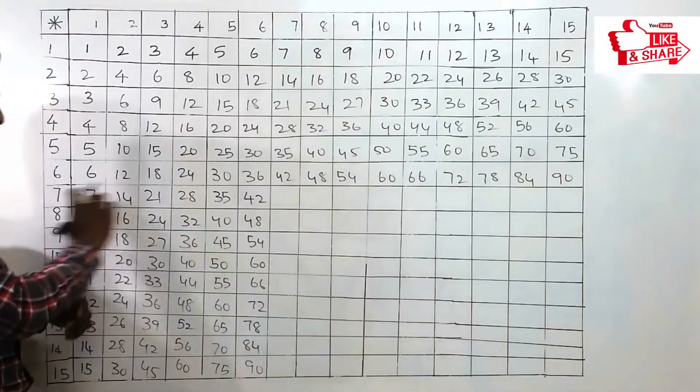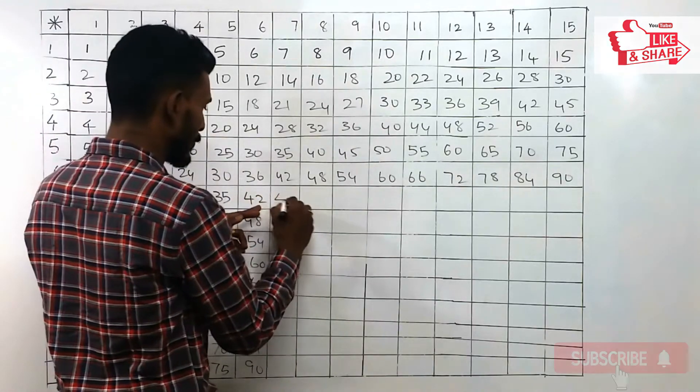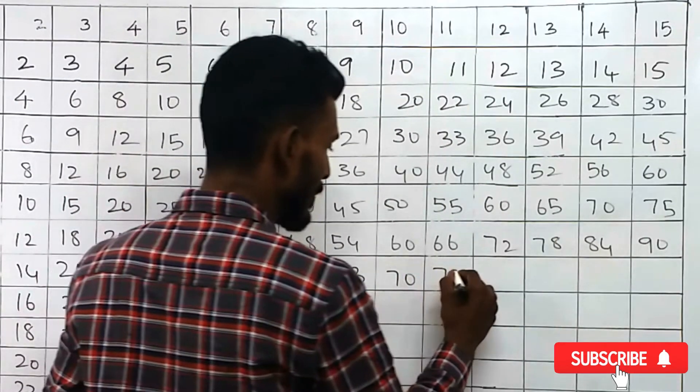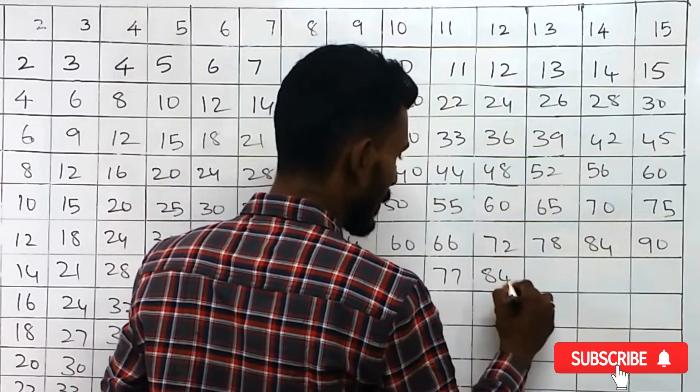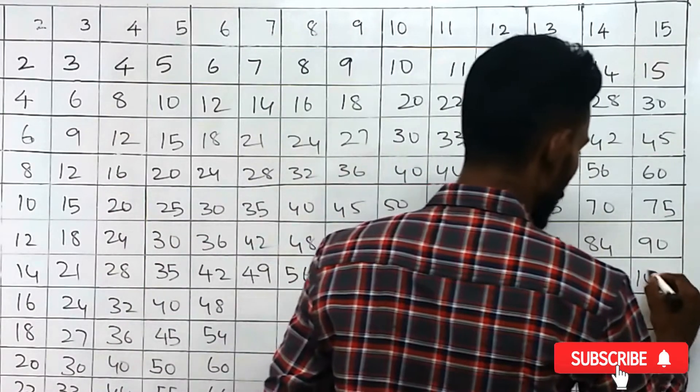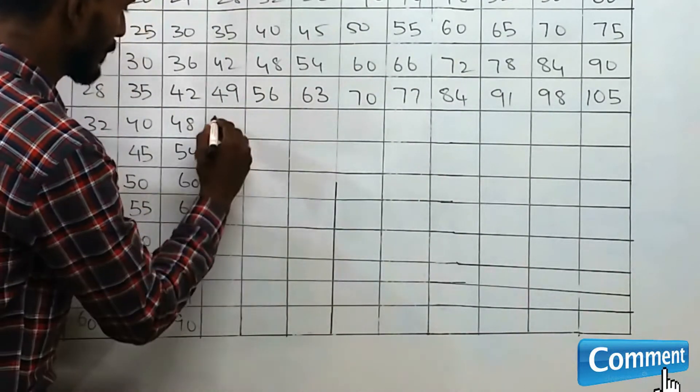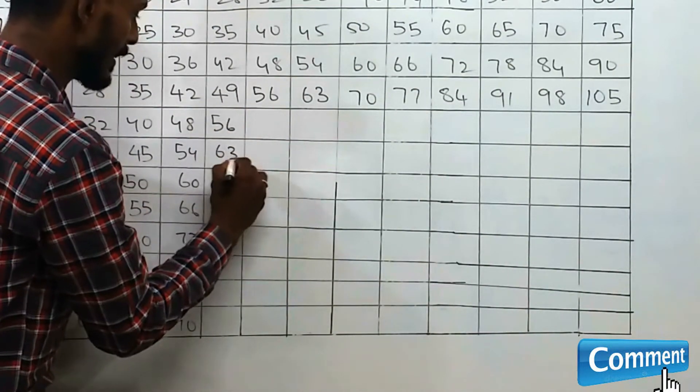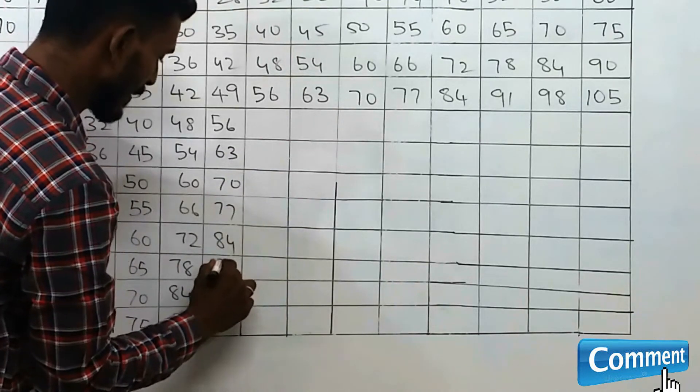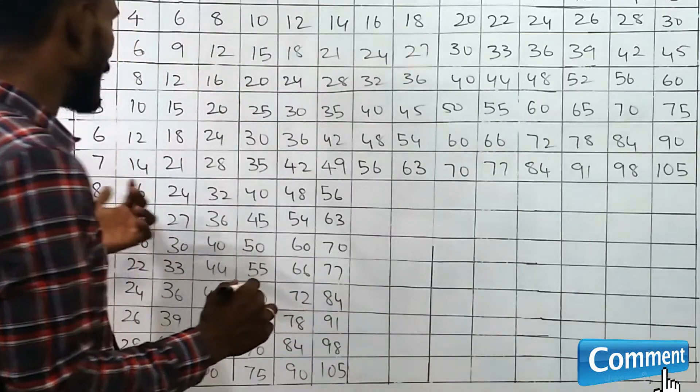In the 7th row, we have to add 7 to every number. That is 42, 49, 56, 63, 70, 77, 84, 91, 98, 105. We have to write these things in the column as well: 56, 63, 70, 77, 84, 91, 98, 105.